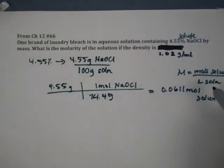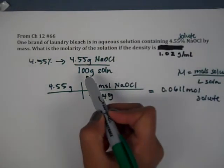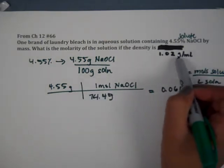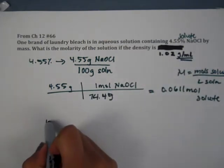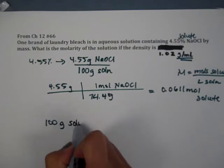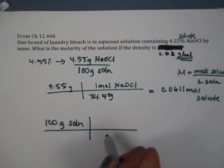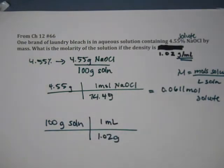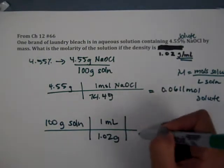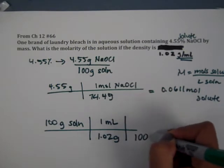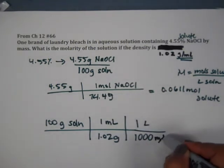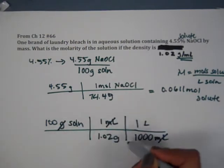Then we have to figure out liters of solution. We only have a density and 100 grams. So we can use the density conversion, 100 grams of solution. And we know that in every 1.02 grams, it's one milliliter. We have that conversion. We're trying to get to liters. We can easily get from milliliters to one liter. So this all cancels.